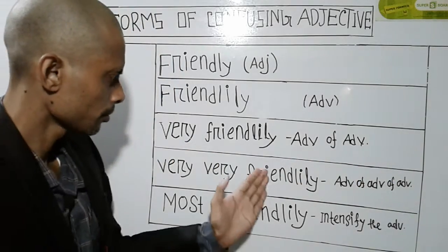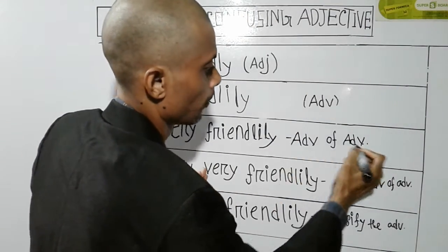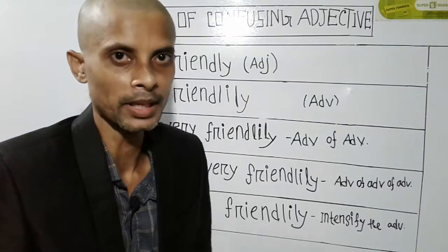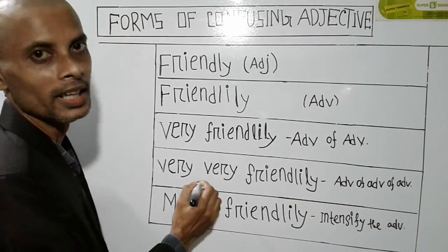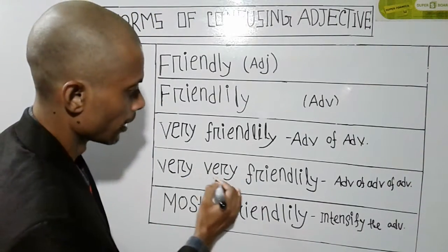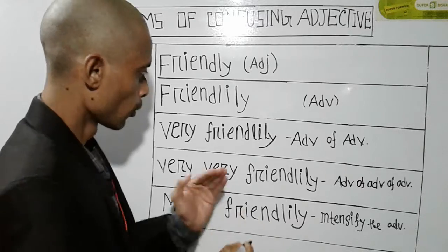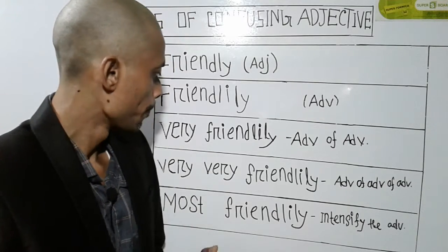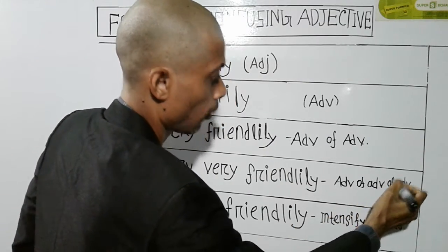We know that the adverb can modify the adverb. Adverb and adverb. Let's see: very friendly — adverb and adverb. When we say this adverb and adverb, we don't know what to do with this adverb. Because it's very simple. So this one is very friendly. Or very very friendly — meaning that it's very very friendly. He behaves very very friendly.